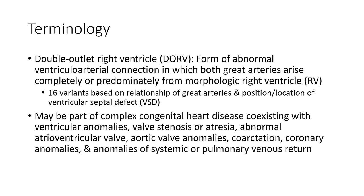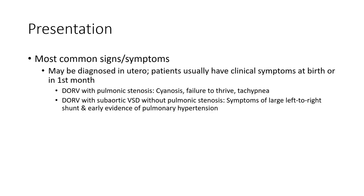Associated anomalies also include coronary anomalies and anomalies of the systemic or pulmonary venous return. Most common symptoms may be diagnosed in utero; patients usually have clinical symptoms or present incidentally.